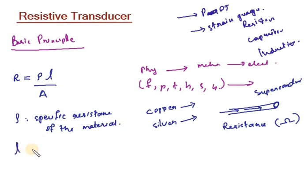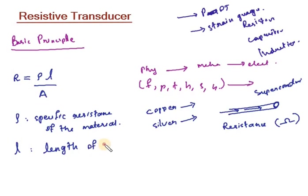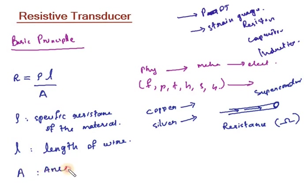What is L? L is the length of the wire. And A is the area of cross section of the wire.